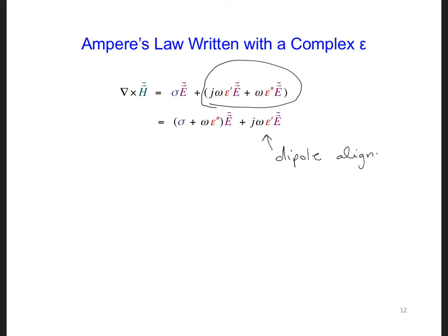The sigma term relates to the acceleration of free charges in conductive materials. And the omega epsilon double prime term is due to dipole rotation friction in dielectric materials. So combining both the sigma and the omega epsilon double prime terms, we can characterize the total power dissipation capabilities of a material.